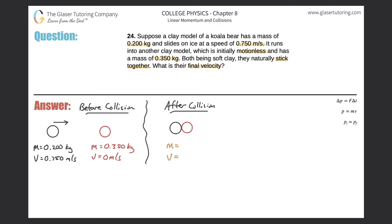One whole piece which is comprised of both the black and red ball which represents the koala bears and we would just add the masses, right? So the black one was 0.200 and the red one was 0.350. And they're asking us for their final velocity. So that's basically this value right here.